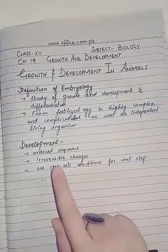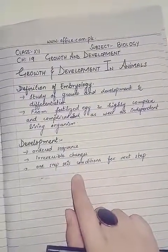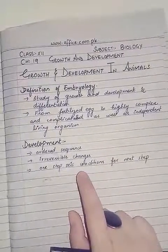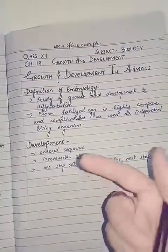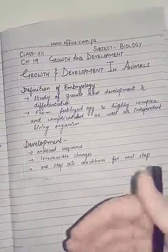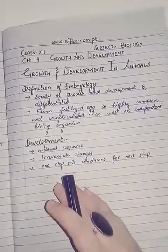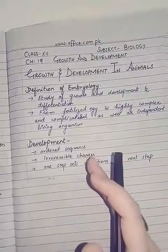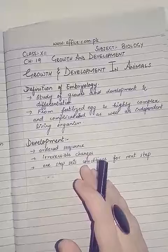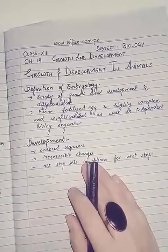Similarly, the second step will set up the conditions necessary for the third step. All animals are somehow alike, therefore the process of development is also similar, but there are some similarities and dissimilarities at various stages of development. Today we will discuss a broad outline of the early stages of development.